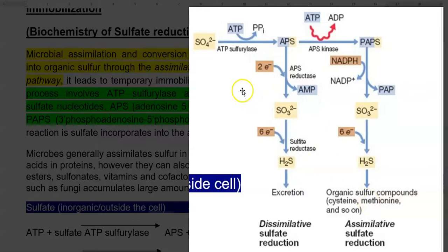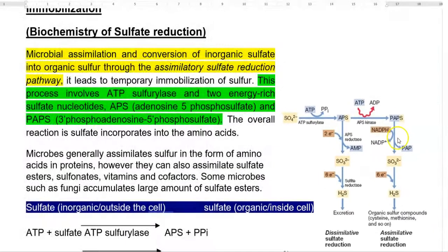In dissimilative sulfate reduction, sulfate is converted into certain intermediary compounds, and finally hydrogen sulfide is excreted out of the cells and reaches the environment. This is technically referred to as dissimilative sulfate reduction. Now we look at the points related to assimilative sulfate reduction.